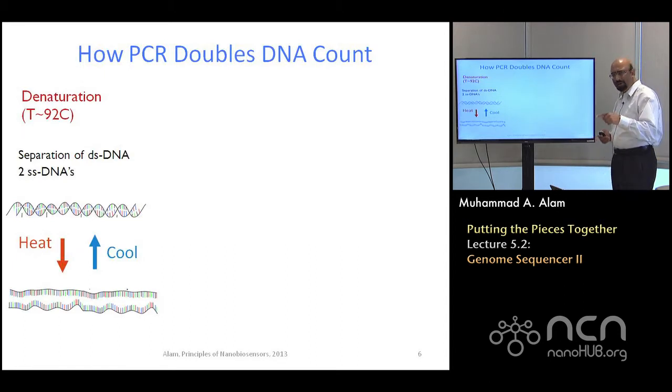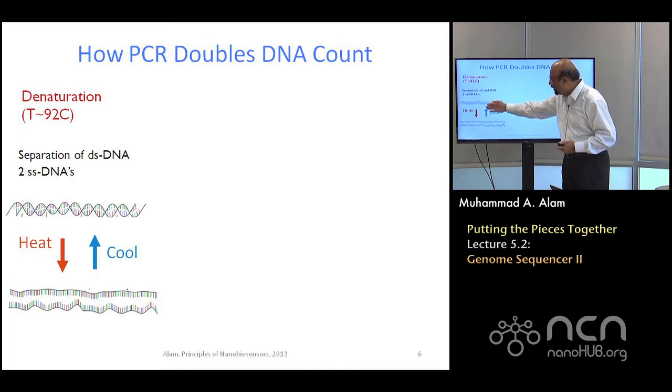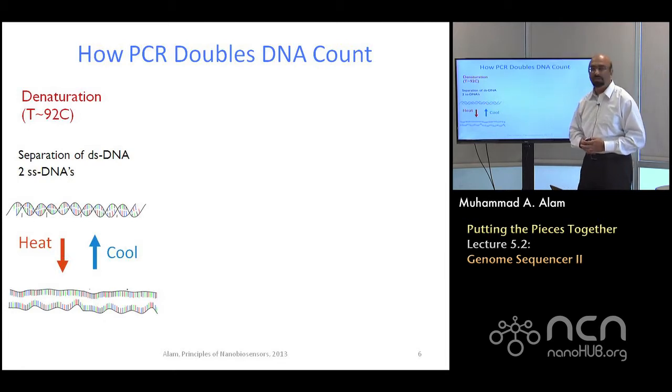How did each cycle go around that sort of doubled the number? Well, it had three steps. One was that raise the temperature so that it gets divided into two single-stranded DNA from the double-stranded DNA. The temperature is about 92 degrees centigrade. It depends on the length of the DNA. If the DNA is longer, then the temperature will be slightly more. If it's shorter, it will be slightly less.